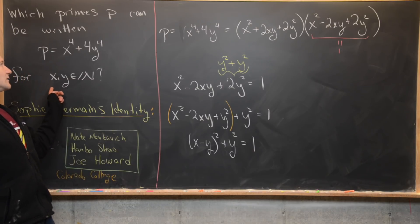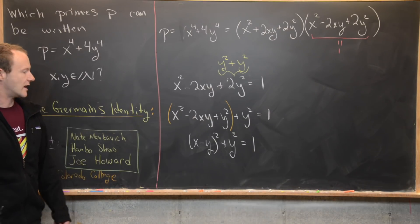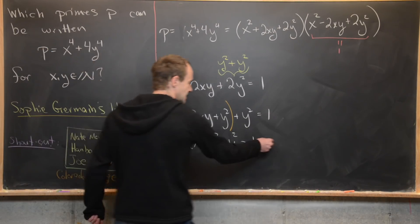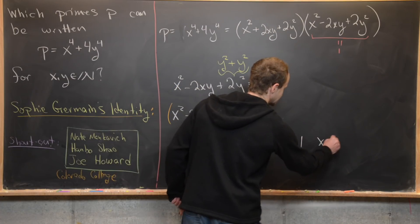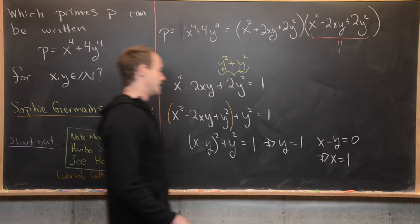Anyway, if y was equal to zero, then we would have P equal x to the fourth, but that wouldn't work for a prime. So that means we've got y equals one and x minus y equals zero, which tells us that x is also equal to one.